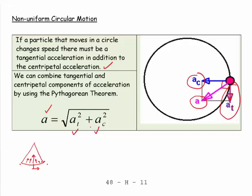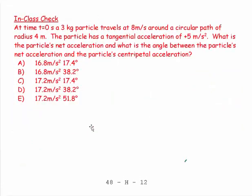The diagram tells you the mathematics, doesn't it? OK, let's do an example of this. And we say at time t equals 0, a 3 kilogram particle travels at 8 meters per second around a circular path of radius 4. So here's my circular path of radius 4.